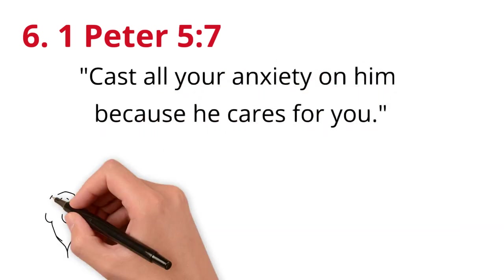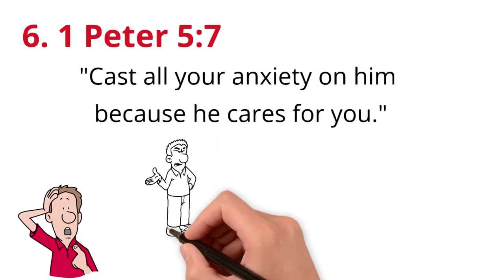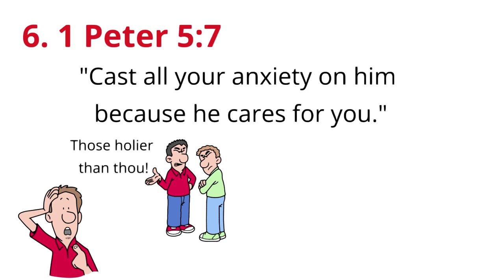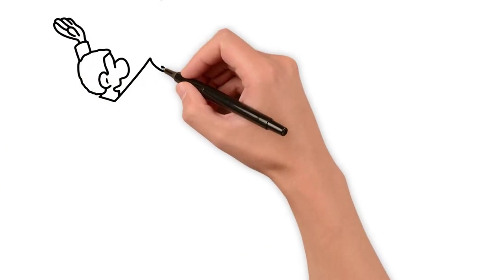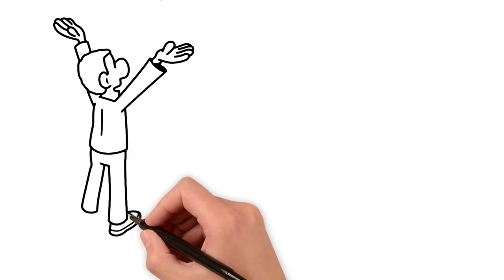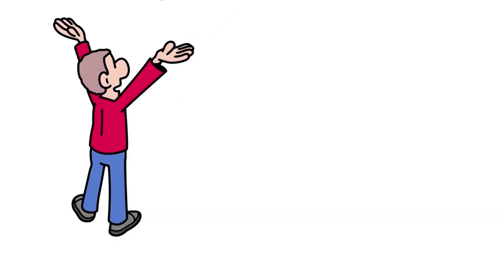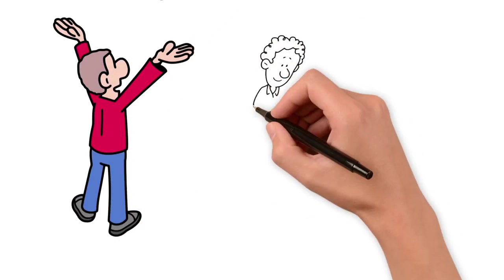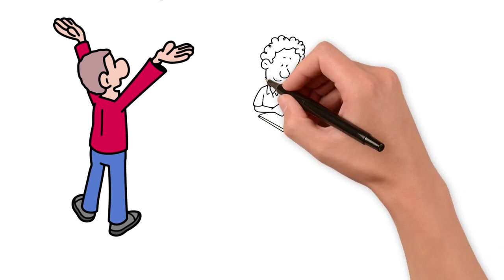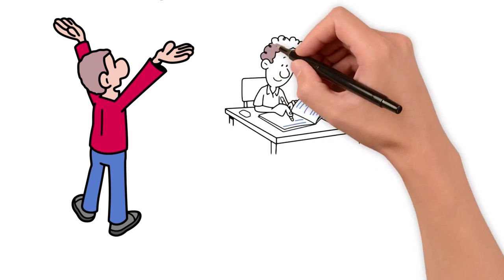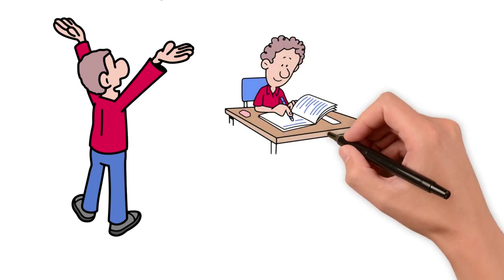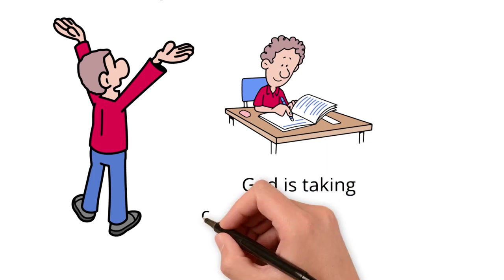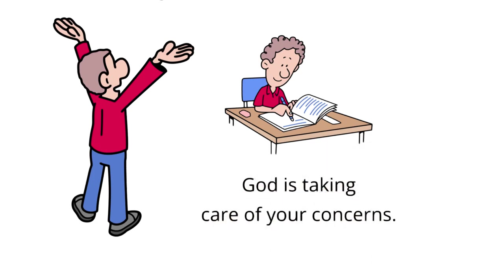Context: Peter encourages Christians who are facing persecution and suffering to entrust their worries to God, knowing that he cares for them. Tip: Release your anxieties to God, trusting that he cares deeply for you. Here's a real life example: Start a journal where you write down your anxieties as a way of casting them onto God. Revisit these entries to remind yourself that God is taking care of your concerns. Therefore, you don't have to worry about them or take care of them yourself.